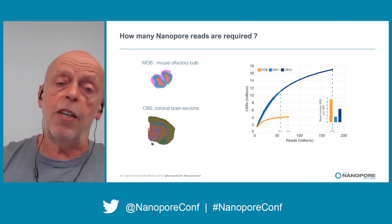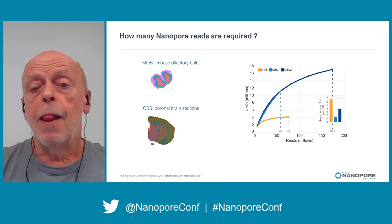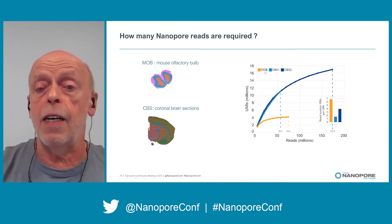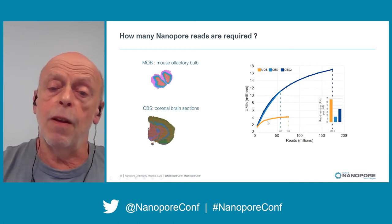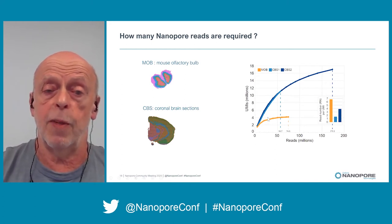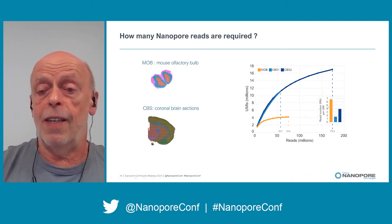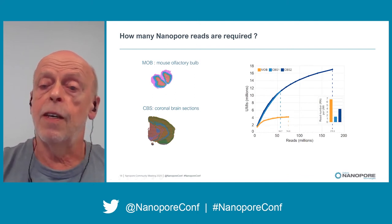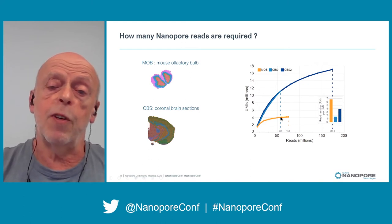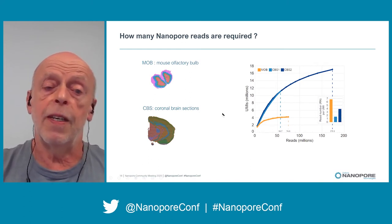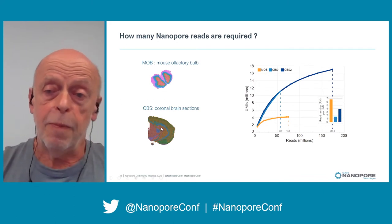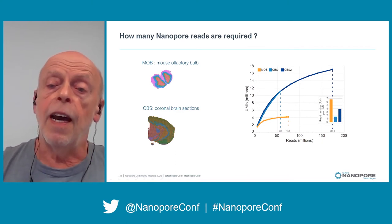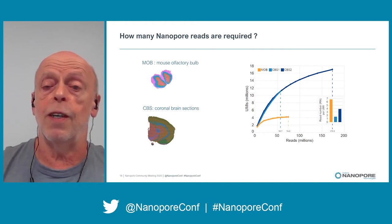How many reads do we need for such an experiment? The mouse olfactory bulb is pretty tiny. If you just want isoform discovery, something around 30 million reads is fine. If you want to call SNVs — where you want each UMI sequenced several times — you need a much higher sequencing depth; something between 50 and 70 million reads. For brain sections, which are much bigger, you need around 100 million reads for isoform discovery and closer to 200 million reads for SNV calling.